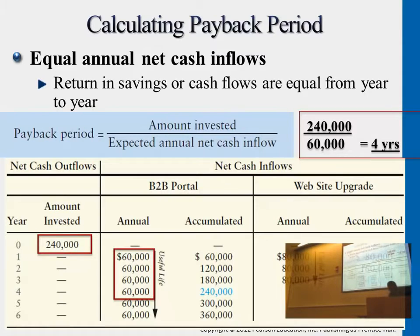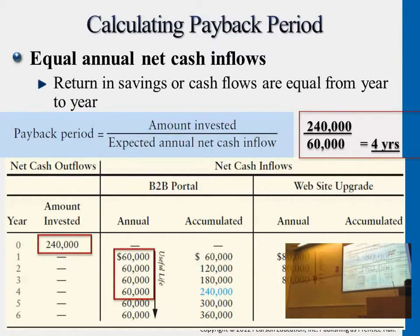If you use the initial investment dollar amount divided by the expected annual cash inflow, you're getting four years for the B2B project — you need four years to cover that initial $240,000. For the website, you're getting $80,000 every single year, so you only need three years to get the money back.